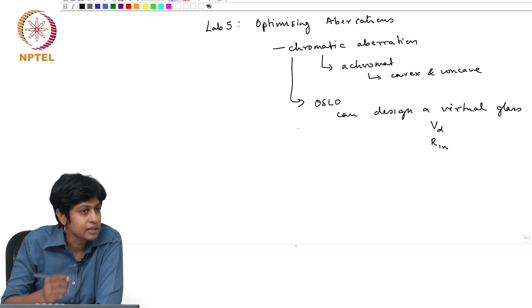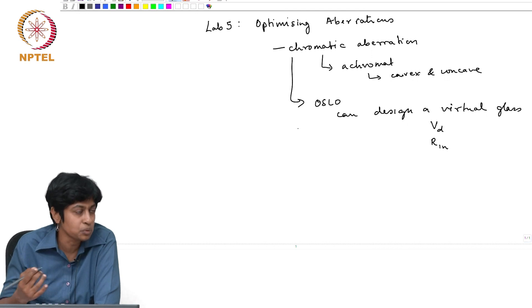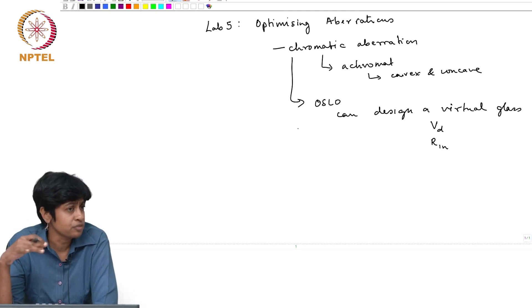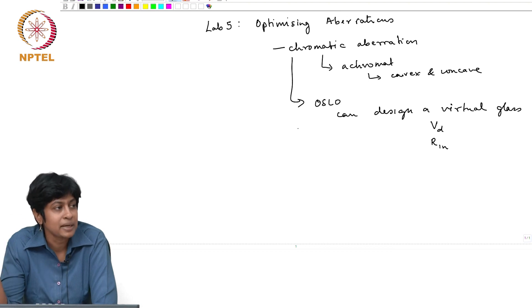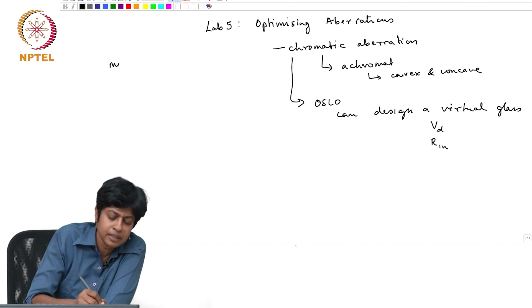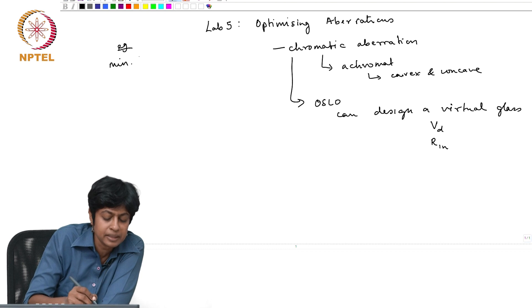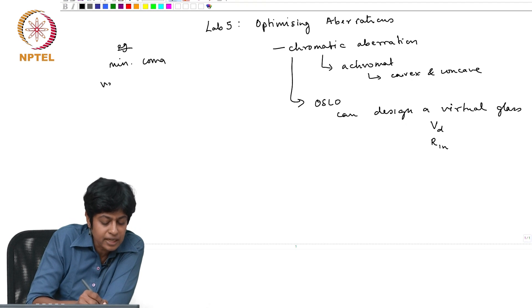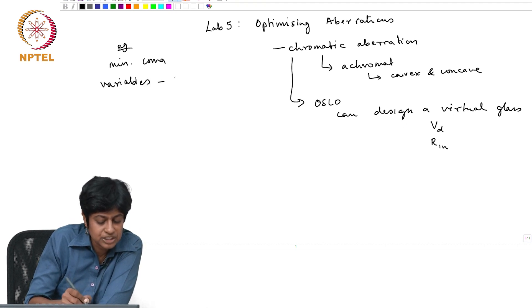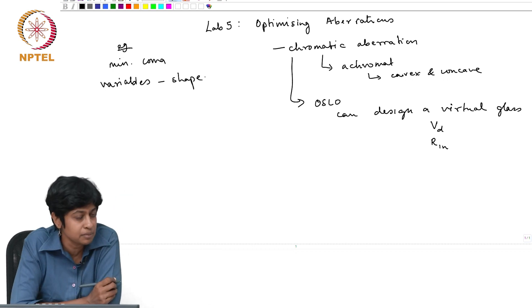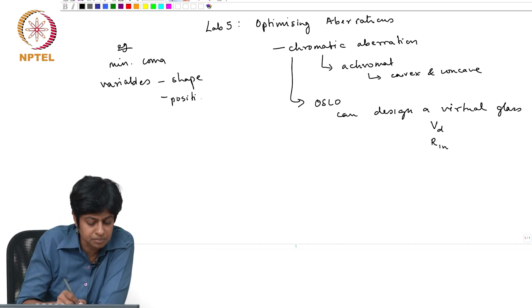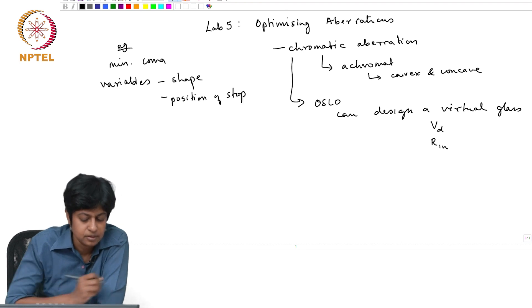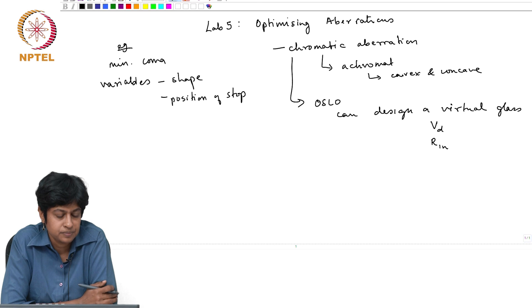You will carry out, and there is a detailed set of instructions on how you go about doing this. The idea is not different from what you have done earlier. Earlier if you were optimizing any parameter you picked the operand. Say you were minimizing coma, right? You might pick as variables the shape, the radius of curvature might have been a variable, maybe the position of the stop might have been a variable.